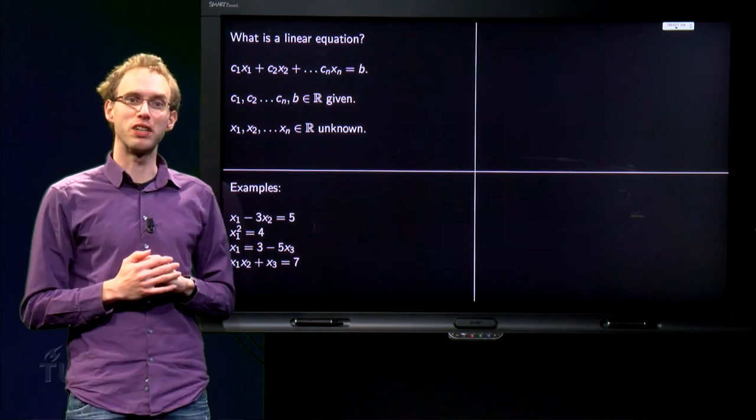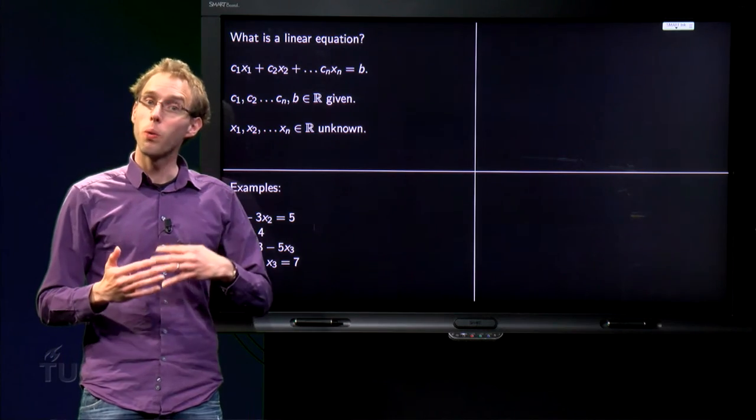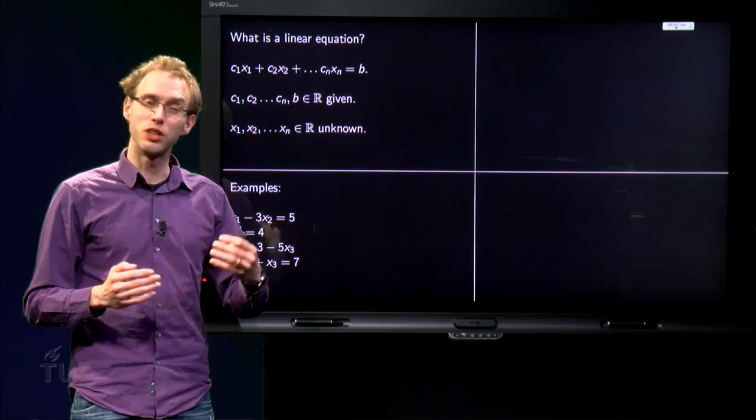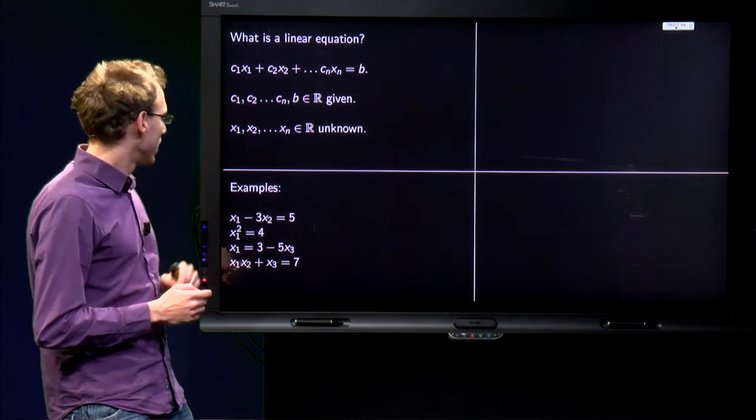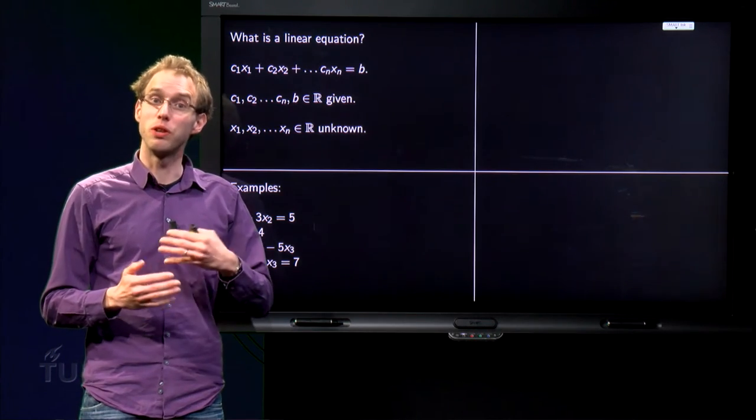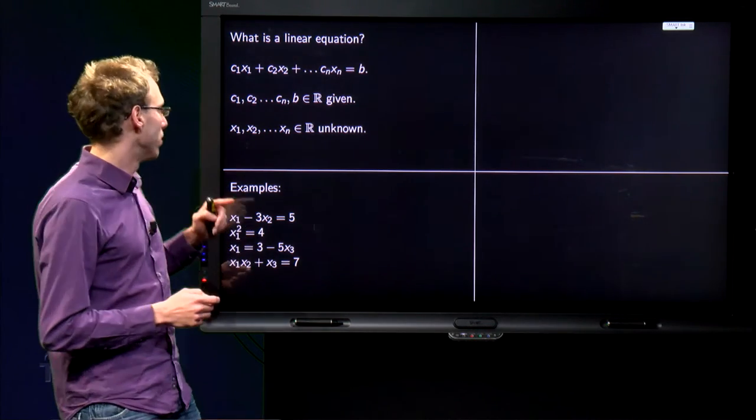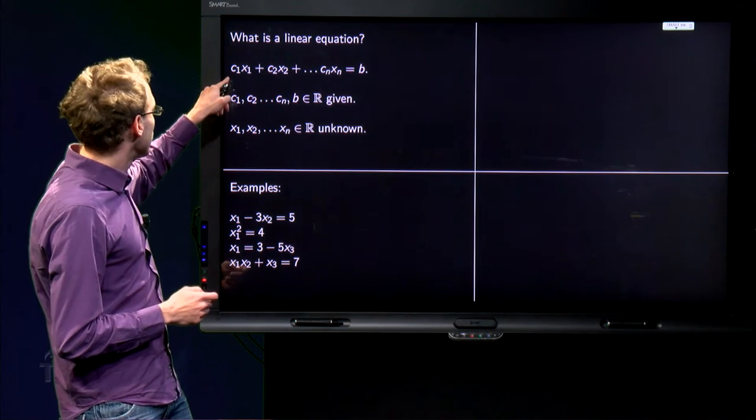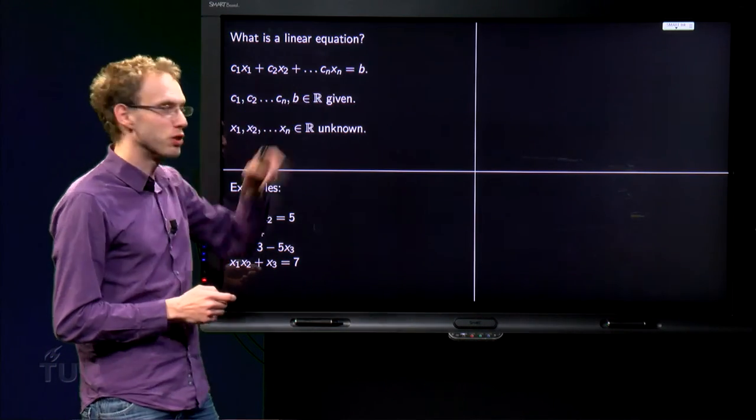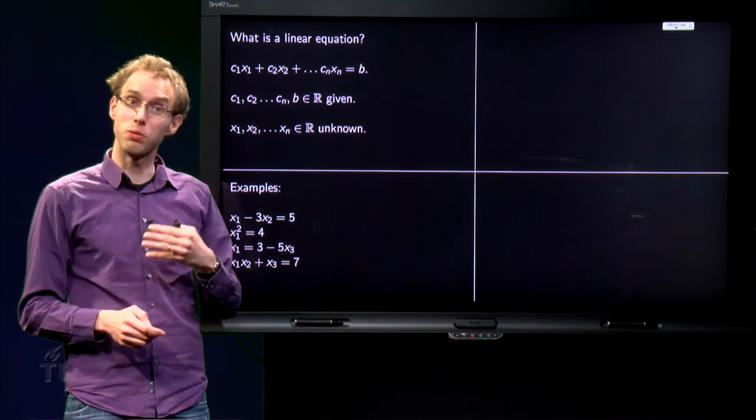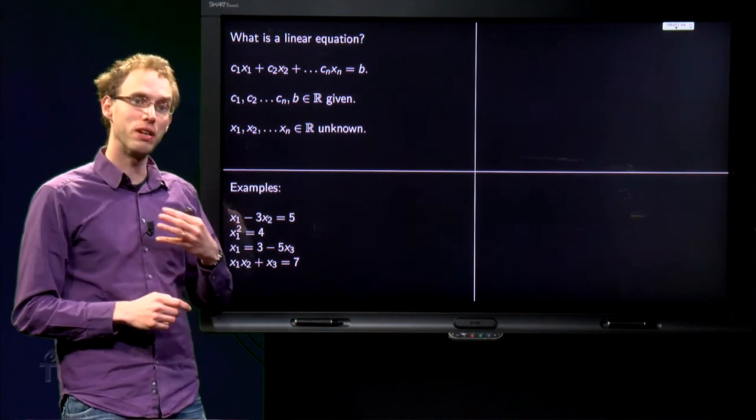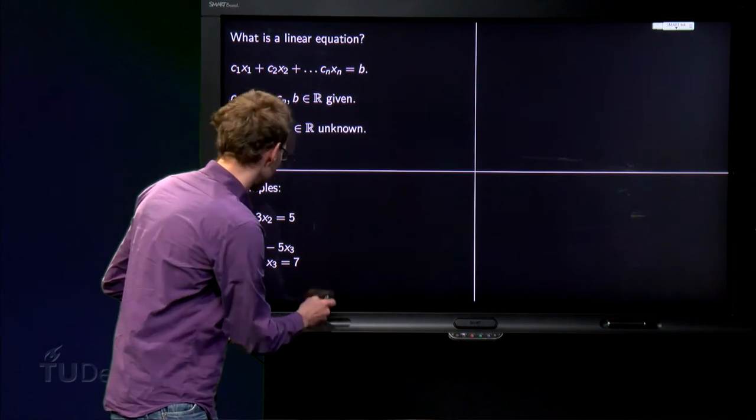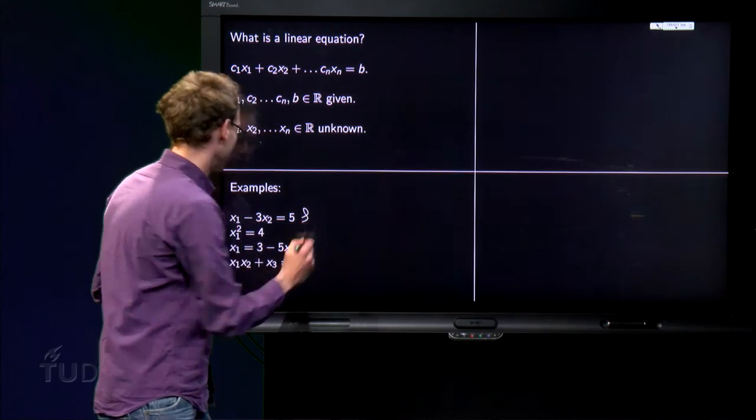So we have a few examples, we have four equations, which equations are linear and which are not. So let us take a look. X1 minus 3 X2 equals 5, well it is of the form C1 X1 plus C2 X2 equals B, where C1 equals 1 and C2 equals minus 3 and B equals 5, so this is a linear equation.